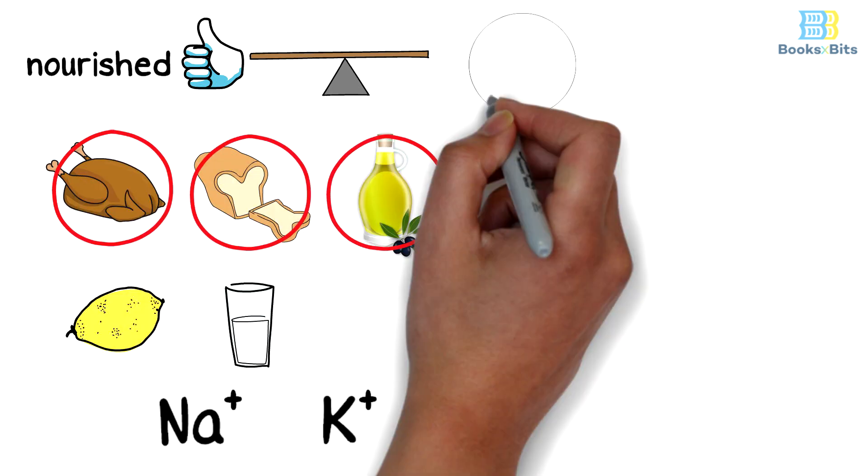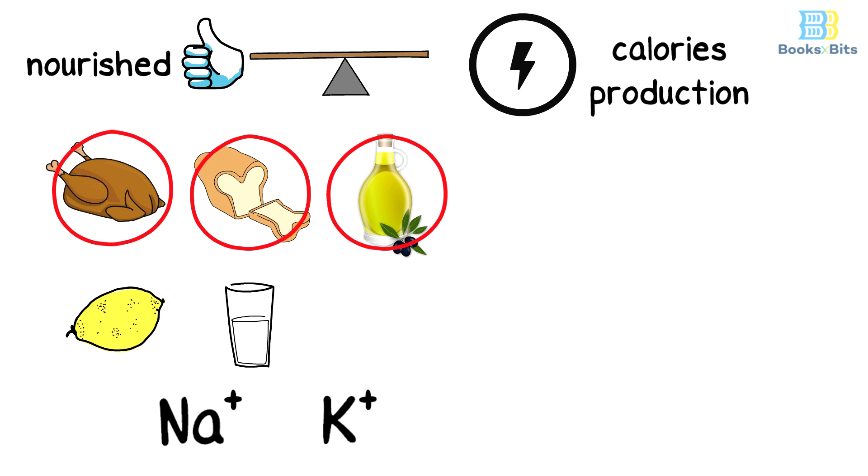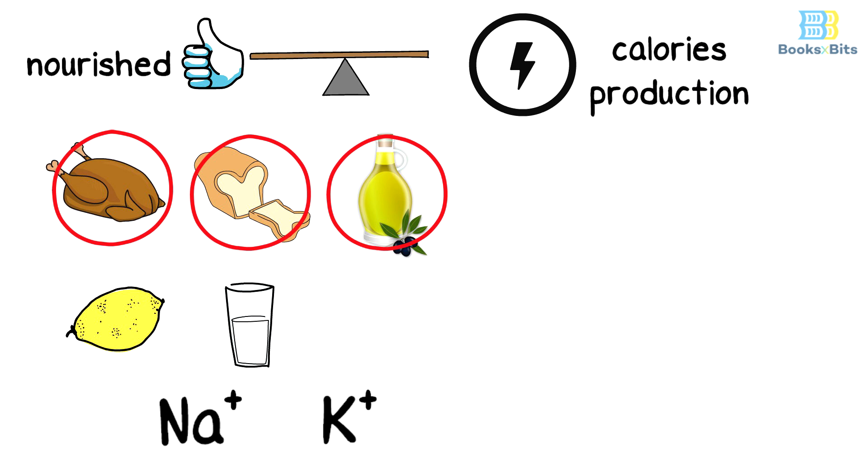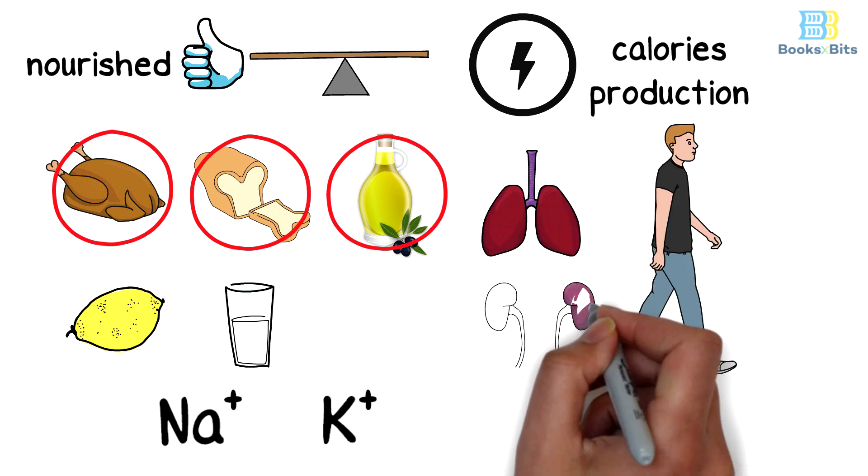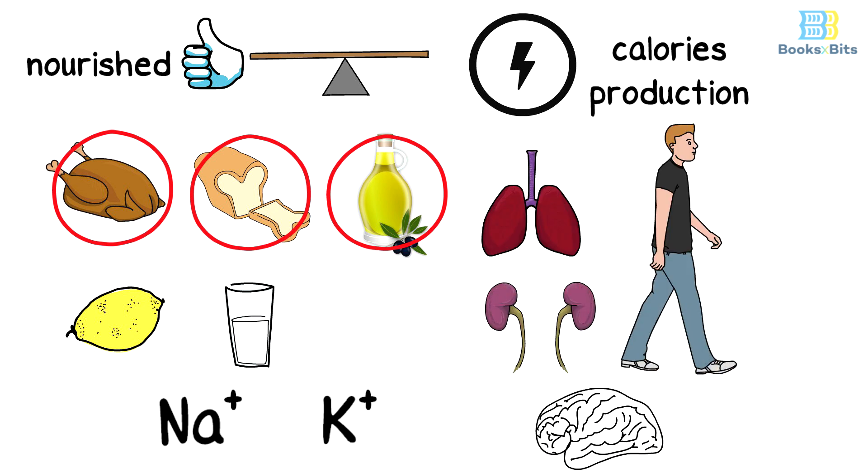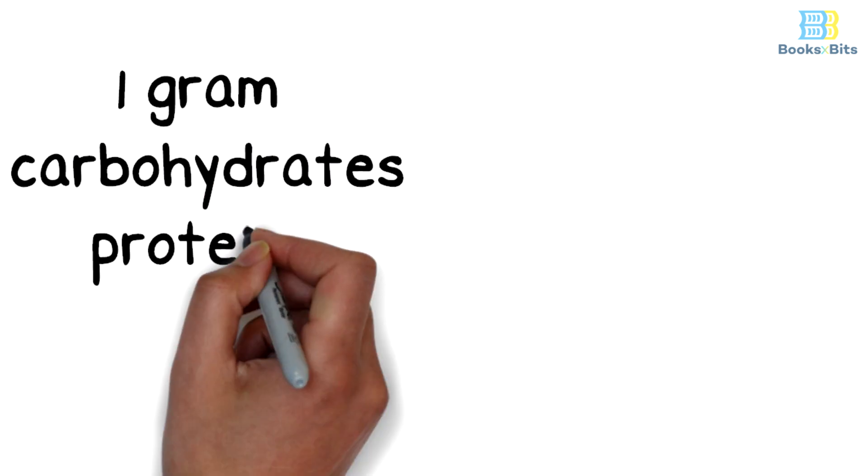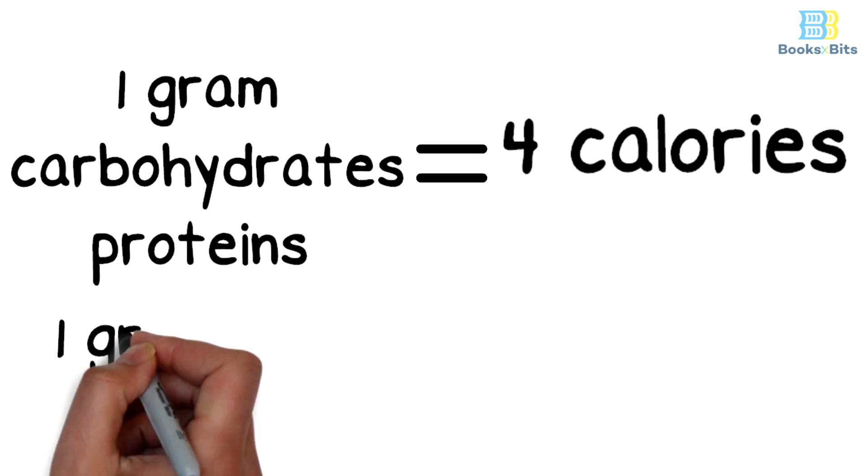Proteins, carbohydrates, and fats are considered the main source of energy and calorie production, through which a person can perform vital processes such as breathing, movement, and kidney and brain functions. One gram of carbohydrates or proteins produces four calories, while one gram of fats produces nine calories.